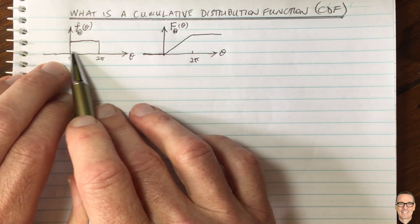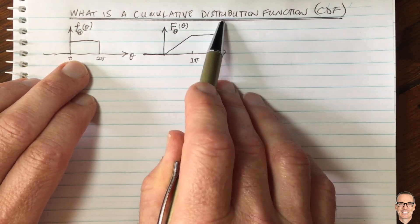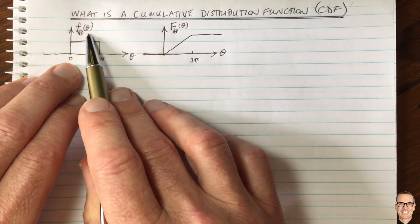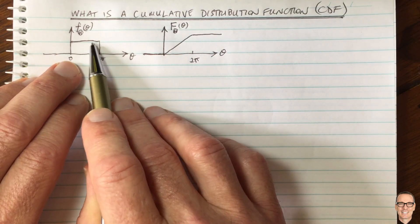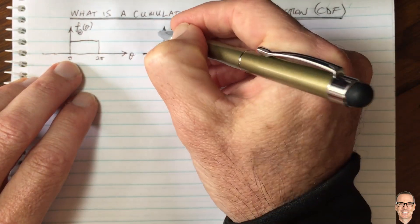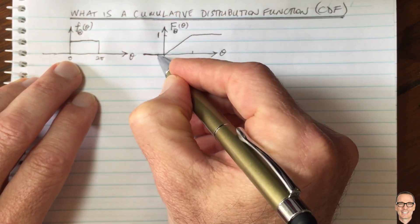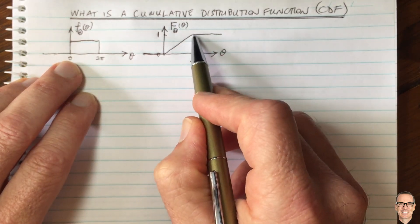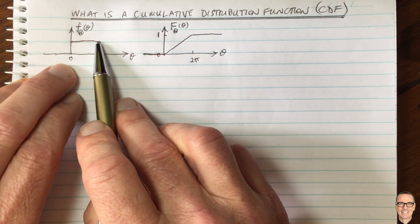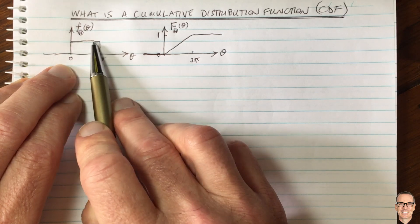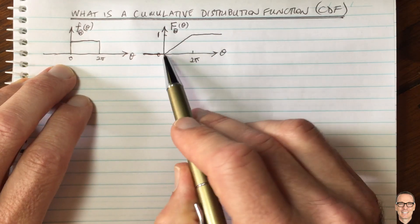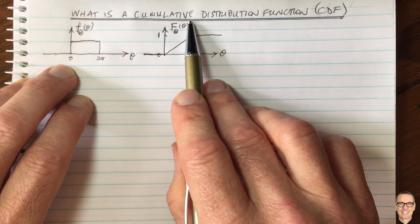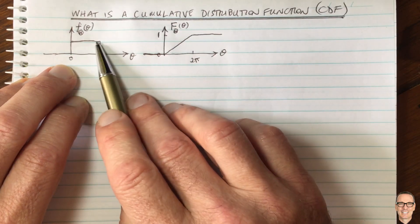We will have accumulated all of the probability once we've gone past the maximum point in this uniform distribution example. So the height of the CDF reaches one. It starts at a height of zero and goes up to a height of one. Because the PDF is flat in this equally likely uniform distribution, we get a constant slope in the CDF, which is the accumulation of the probability density.